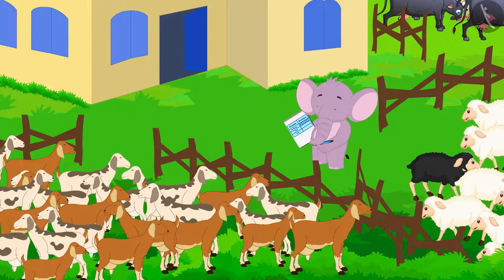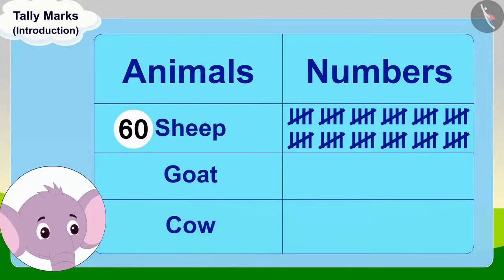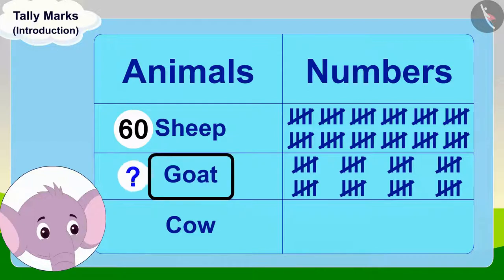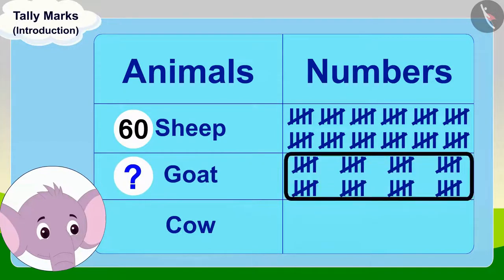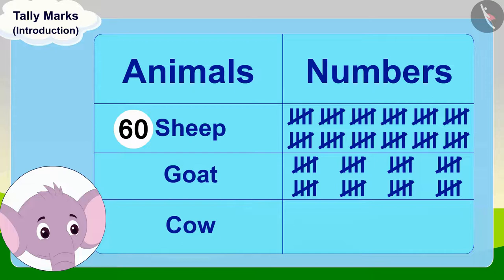Now Appu started counting his goats. He drew tally marks for the goats in his table. Can you tell how many goats Appu has in total? If you want, you can stop the video and find the answer. That's right — Appu has forty goats.